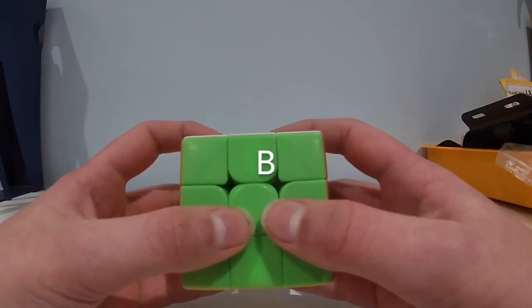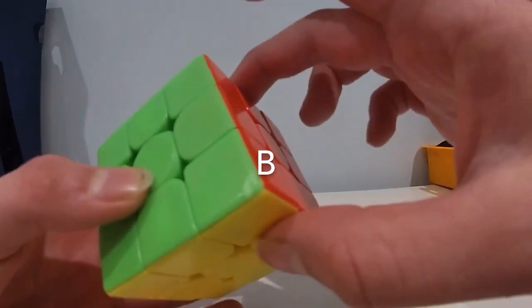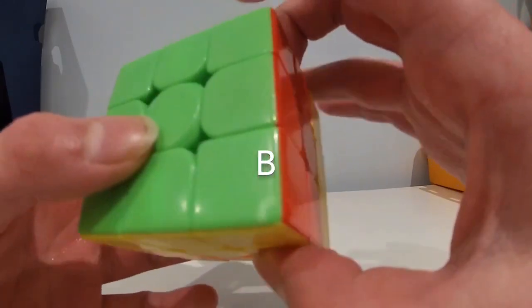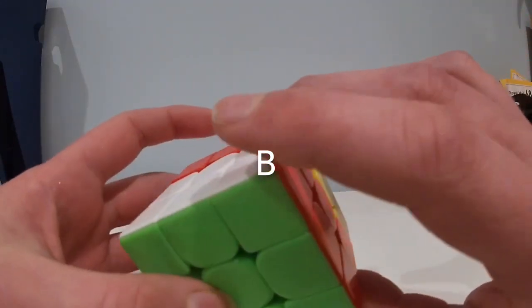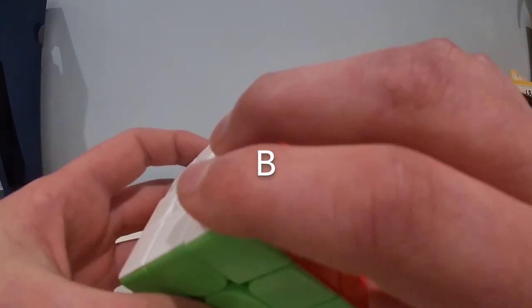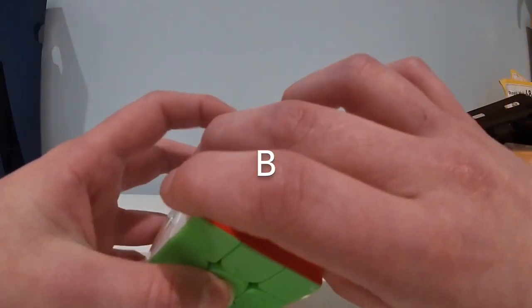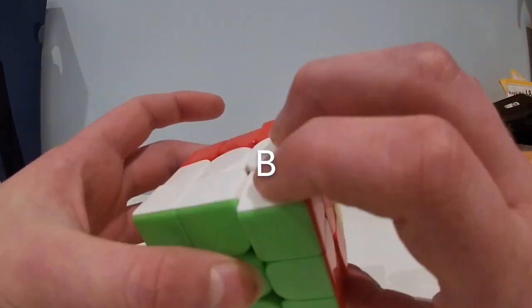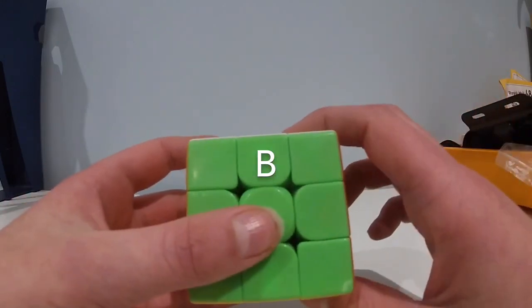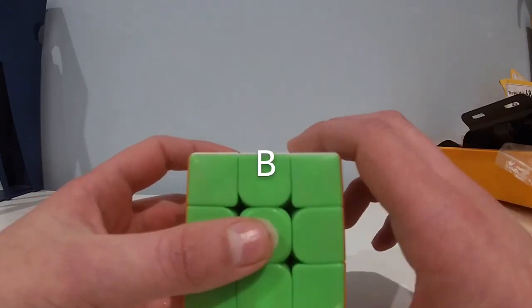B moves are again quite hard. For B moves you have to re-grip to this position. What you then do is you basically push with your ring finger. This is quite a hard finger trick to do. You re-grip to this position, take your ring finger, place it here and push. That might take a bit of practice and you probably won't be able to do it at first, but once practiced it can be done well.